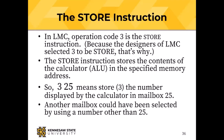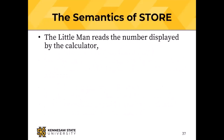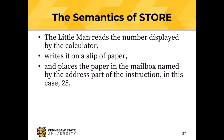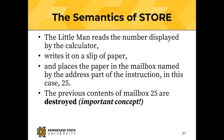What happens is: the little man reads the number on the calculator, writes it on a slip of paper, and places the paper in the mailbox named by the address — in this case mailbox 25. The previous contents of the mailbox are destroyed. Each memory location can hold only one value at a time, and when we store a new value the old value is destroyed.